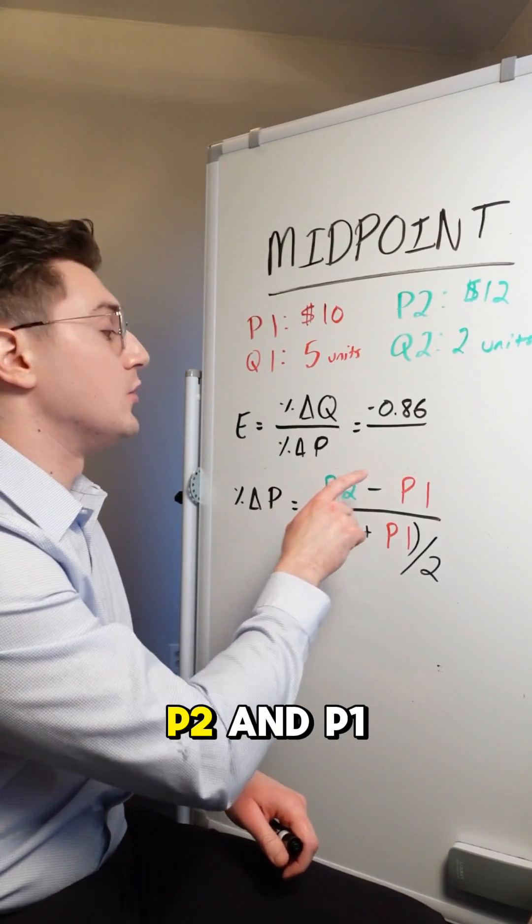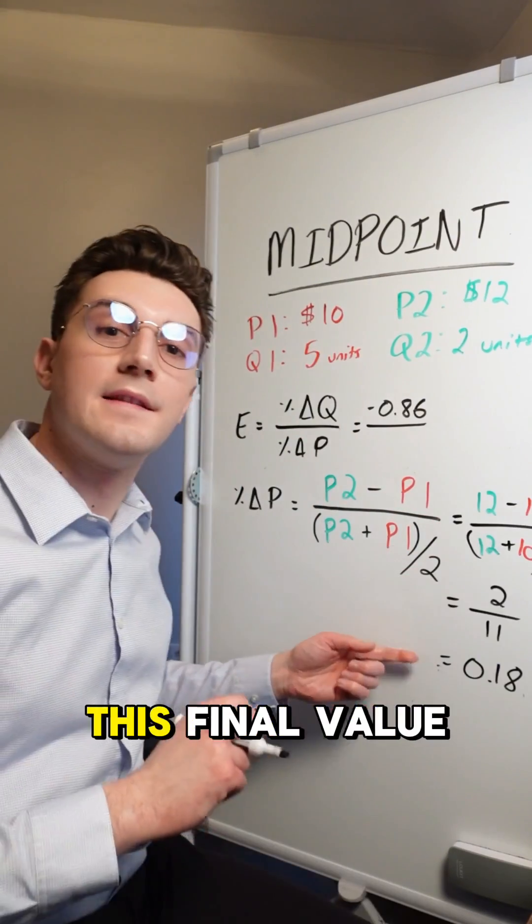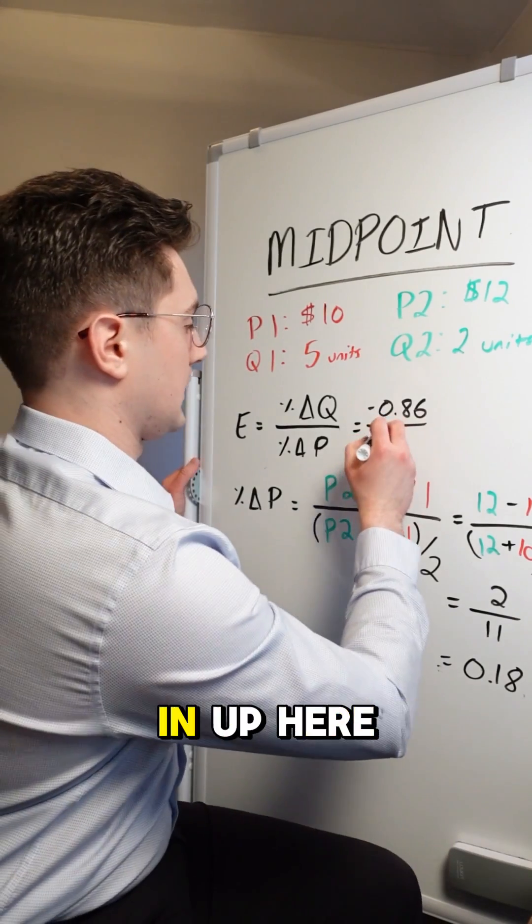Now let's do this, but for price. We've now got P2 and P1. So let's plug in the values from up here. And when we solve, we get this final value here, which I'll plug in up here.